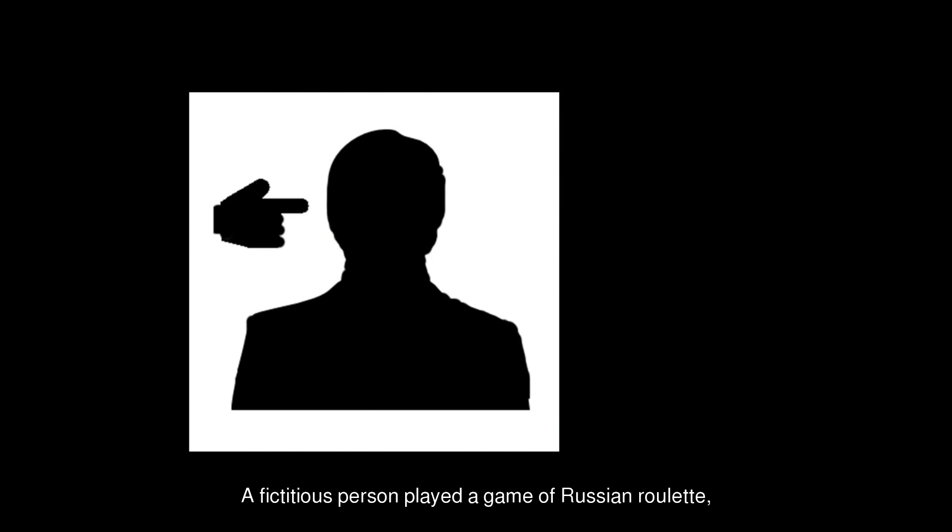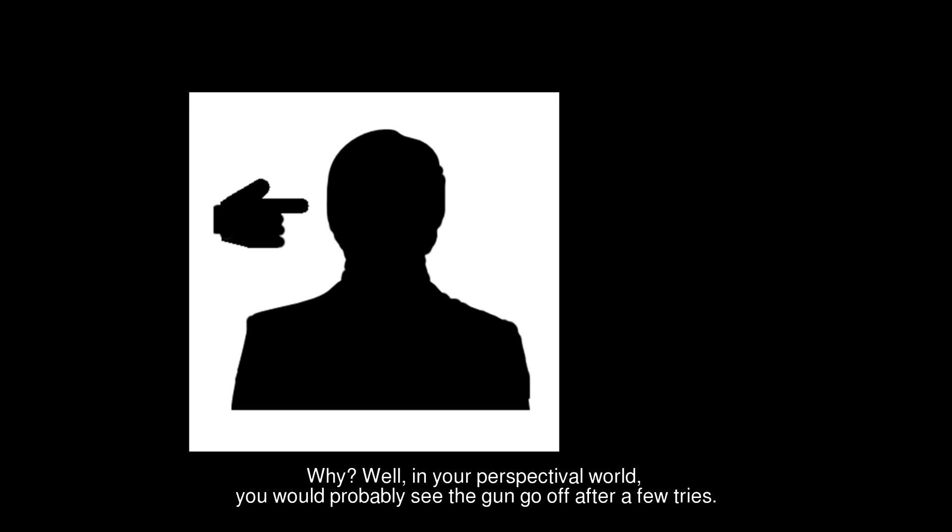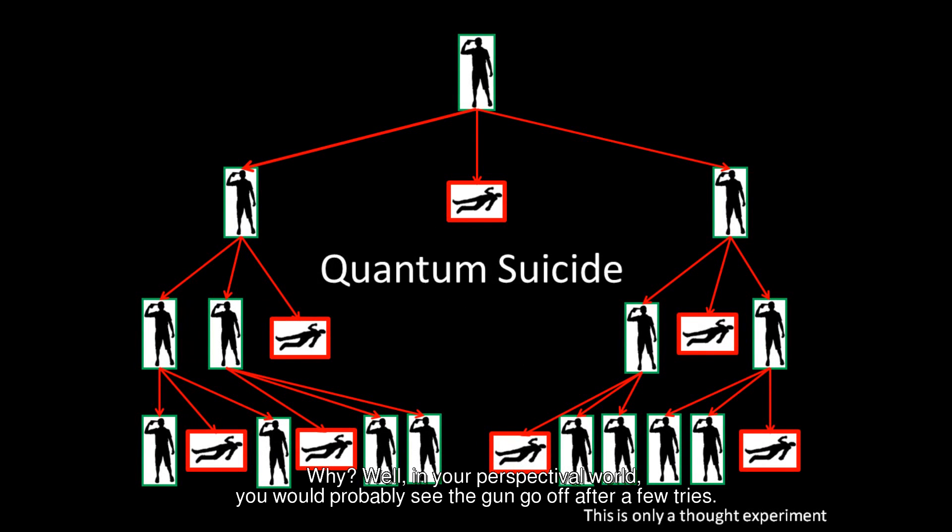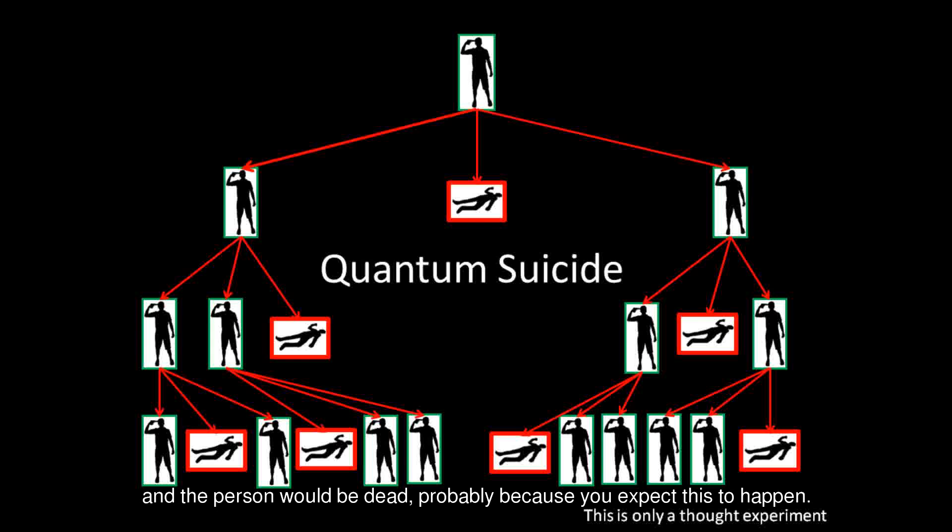A fictitious person played a game of Russian Roulette. You would expect that he would be dead after a few tries. Only from his perspective, he can continue to fire the gun, and every time it misfires. Or he would get wounded, but he will never die. Why? Well, in your perspectival world, he would probably see the gun go off after a few tries, and the person would be dead, probably because you expect this to happen.